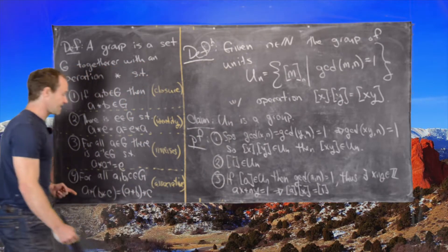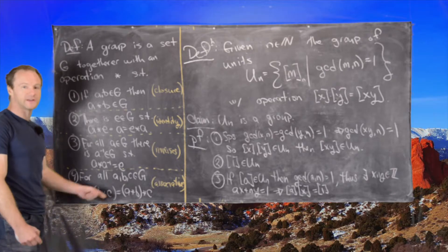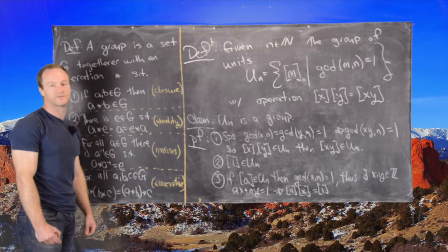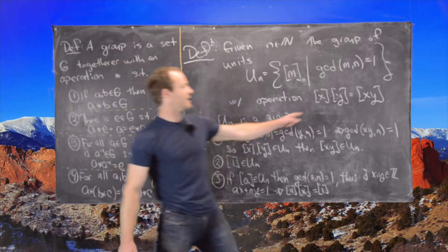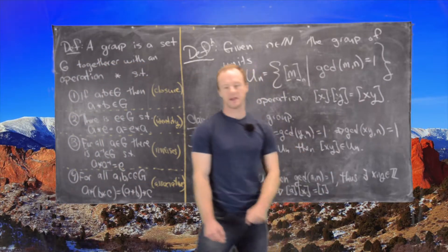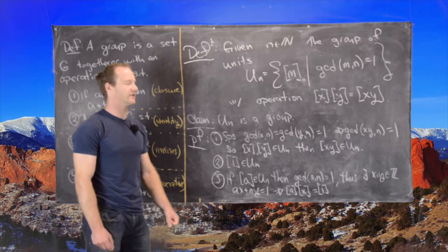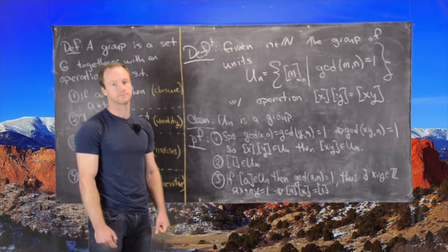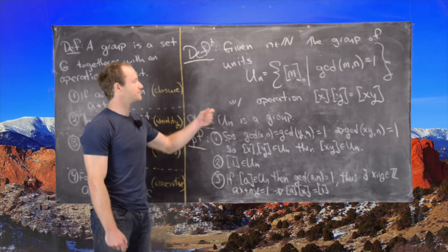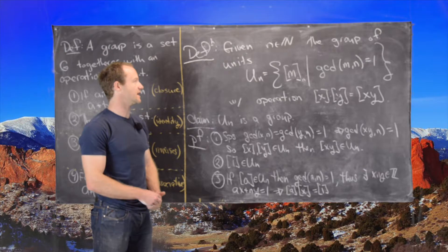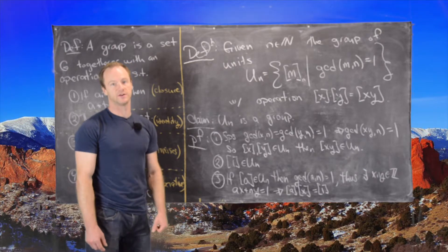Now associativity, I won't write anything down for that. Notice the associativity is just inherited from the fact that the multiplication happening here is happening within the integers themselves, and we know the associativity of multiplication in the integers. So I'll clean this up and then we'll look at a couple of multiplication tables in Un for some values of n.